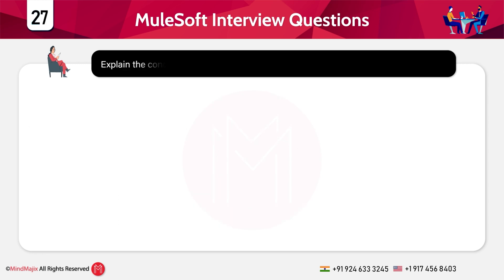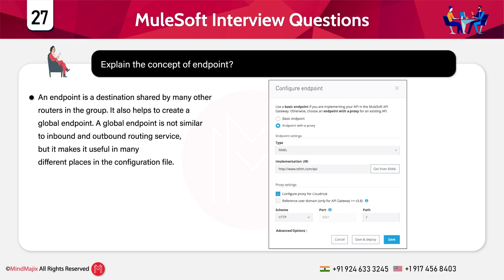Explain the concept of endpoint. An endpoint is a destination shared by many other routers within the same group. It helps create a global endpoint. A global endpoint is not similar to an inbound and outbound routing service but makes it useful in many different places in the configuration file. The entire endpoint destination must be named to the specific service, and these names identify the global endpoint in the group of routers. The global endpoint also helps clarify the usage of a specific destination.